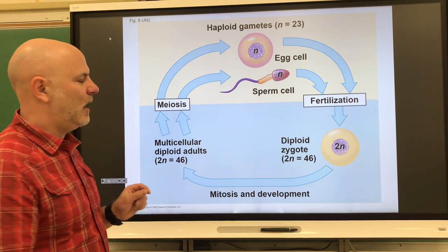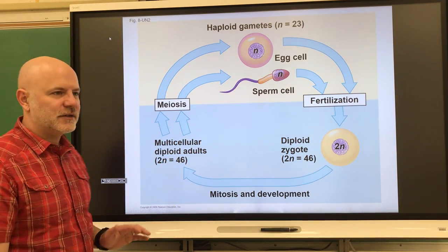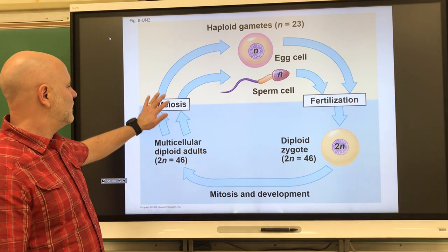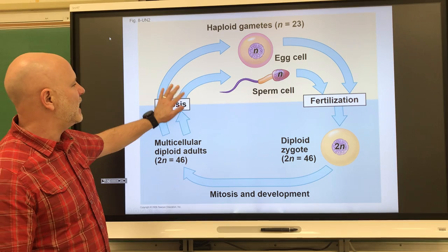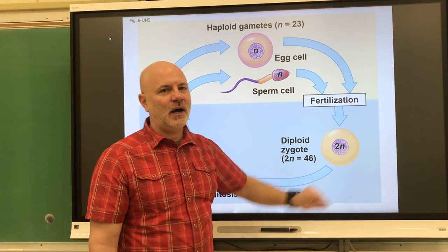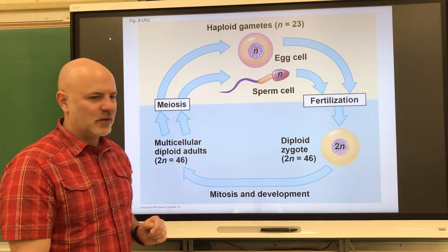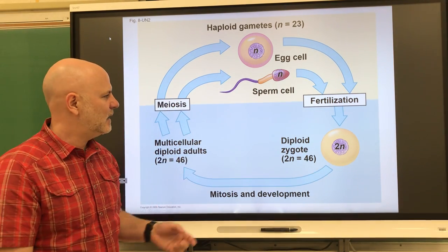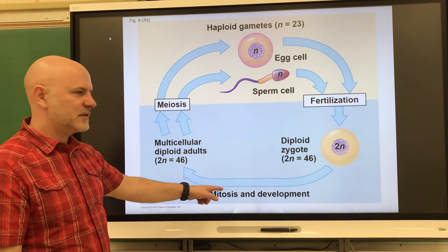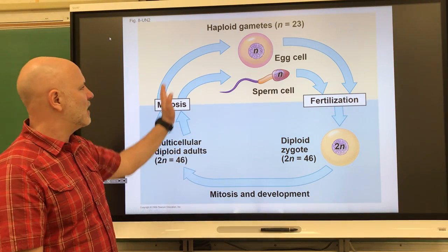If we take a look at our life cycle, we're going to start off with adults that are diploid. In their gametic cells, we're going to make gametes through meiosis. Then at fertilization, we're going to restore that diploid condition in the offspring, starting with the zygote — which is a fertilized egg. Then through mitotic divisions, we get back to adults where we can undergo meiosis again.